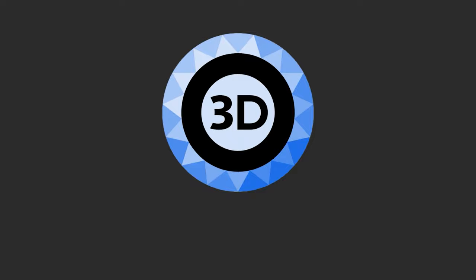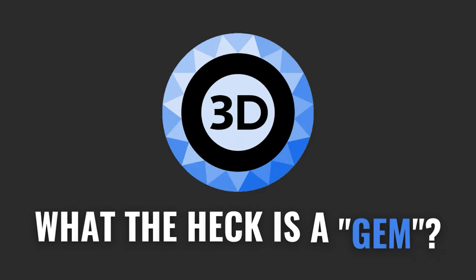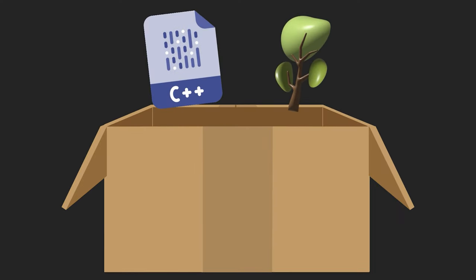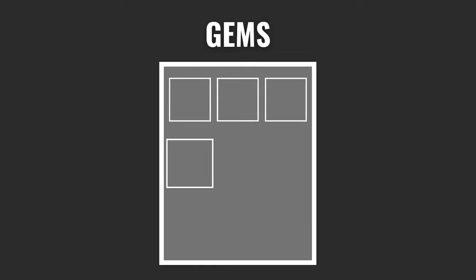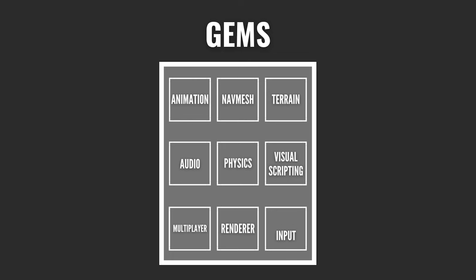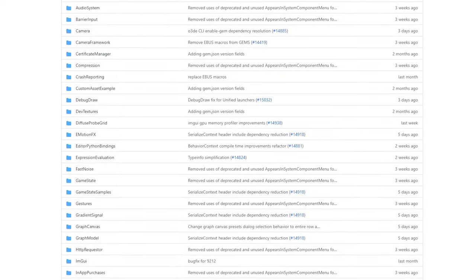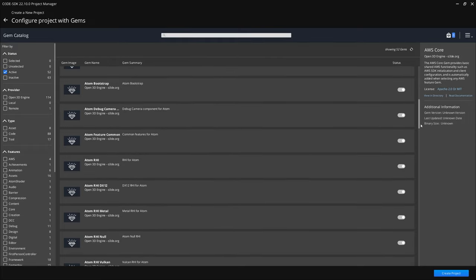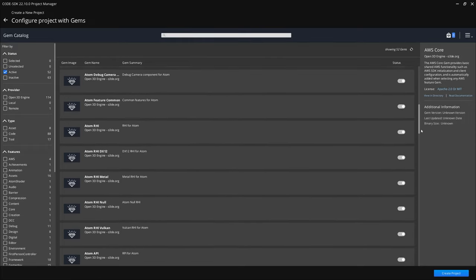If you're not familiar with O3DE yet, you may be asking yourself what the heck is a gem. Well, gems basically act as modules or packages that contain code or assets that provide a specific functionality to the engine. O3DE was built to be modular, so most of the engine is made up of these modules called gems. This includes gems for things like the renderer, physics, visual scripting, audio, and a bunch of other things, which are all included in the default project template.